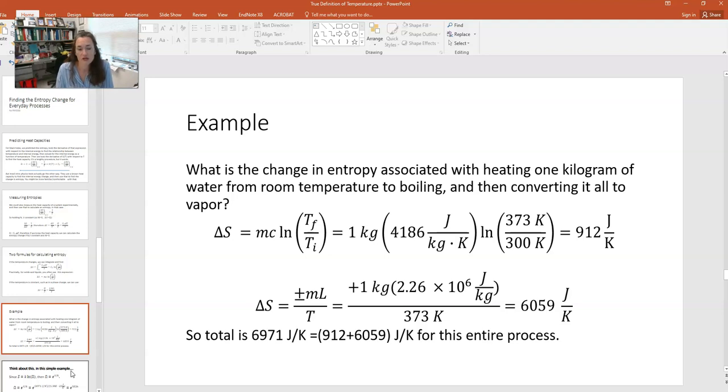And then divided by the temperature at which that phase change occurs. Remember that the temperature does not change during the phase change. And so the temperature that you would input here is 373 kelvin, which is the temperature of boiling water. If you solve for that, you get an entropy change of 6,059 joules per kelvin for boiling all the water away. So for the entire process, you would add those two values, 6,059 plus 912 joules per kelvin. That gives you a total of 6,971 joules per kelvin for this problem.